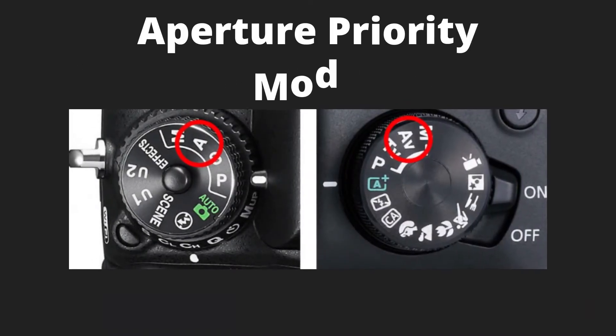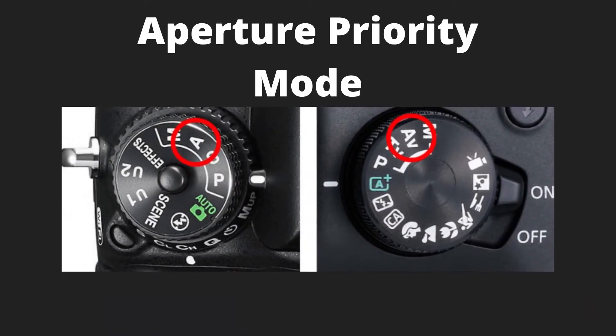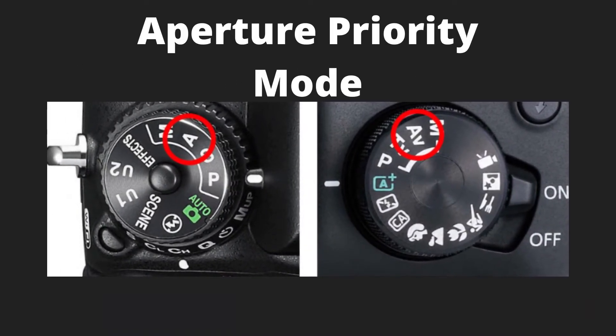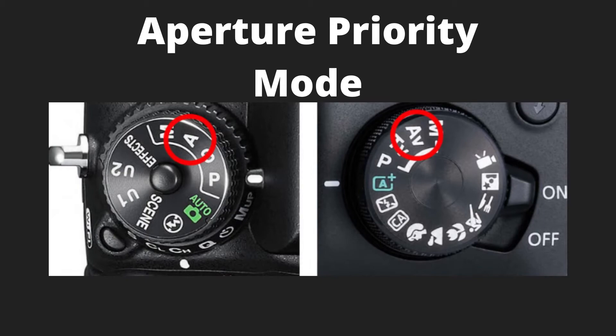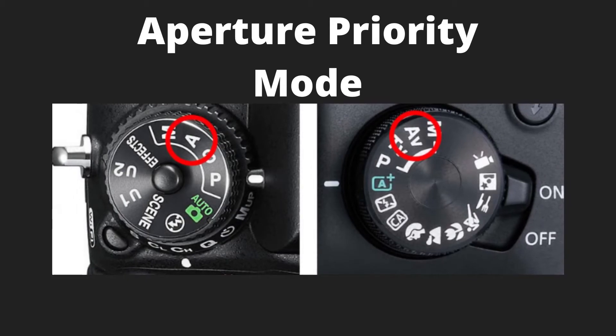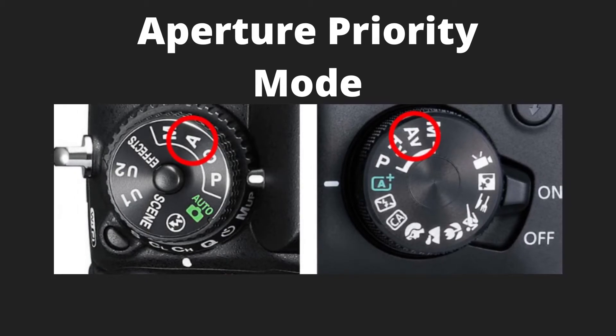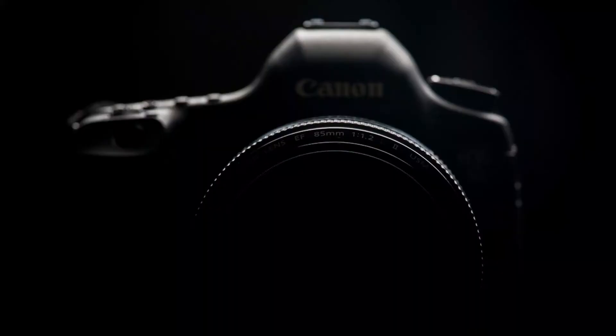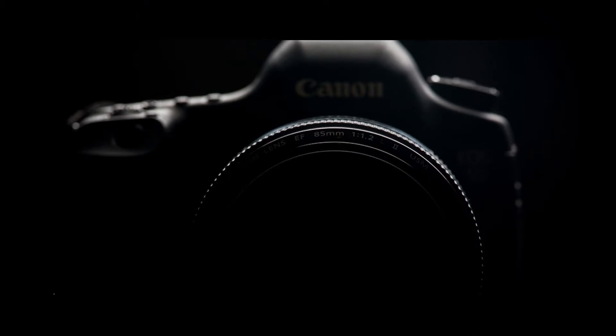If you are a beginner, go with a low f-number such as f/1.6, f/1.8, or f/2. In a digital camera you can see an emblem of A or Av, and by enabling that you move to aperture priority mode.